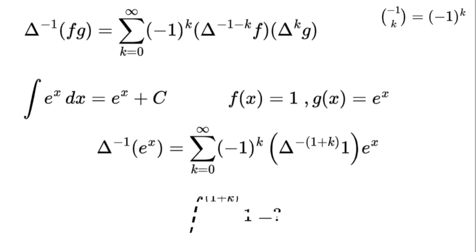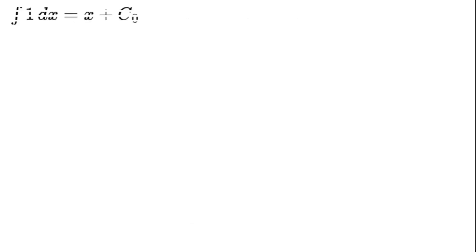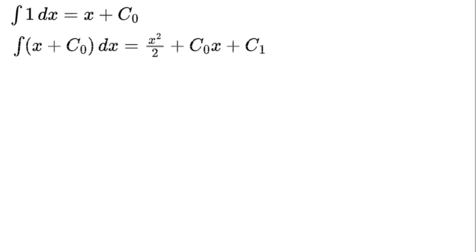First, we need the antiderivatives of f(x) equals 1, and each one comes with a constant. The integral of 1 dx equals x plus c₀. Second, the integral of (x plus c₀) dx equals x squared over 2 plus c₀ times x plus c₁.